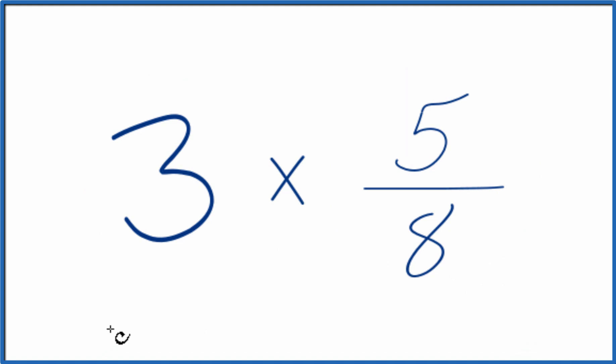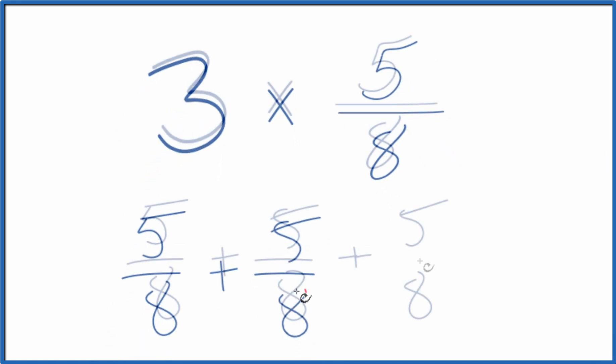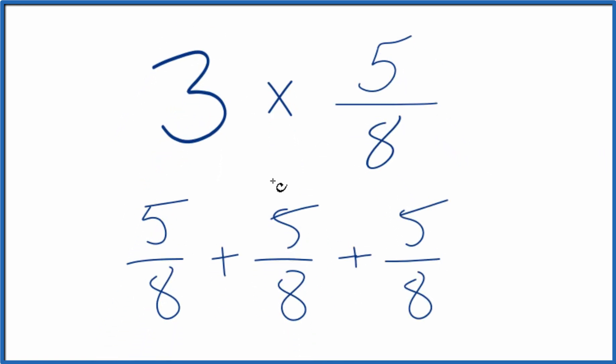So the first way is you could just add 5 eighths up 3 times, like this. So we have 3 of these, 1, 2, 3 of our 5 eighths.